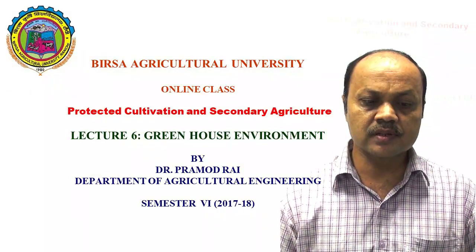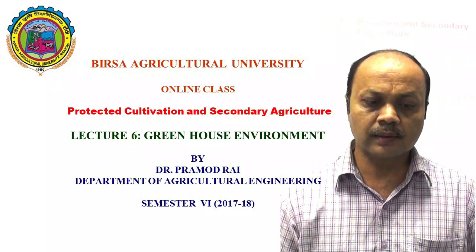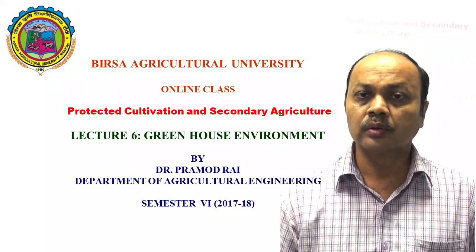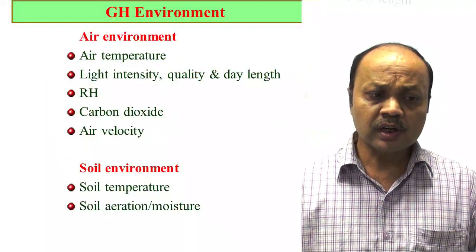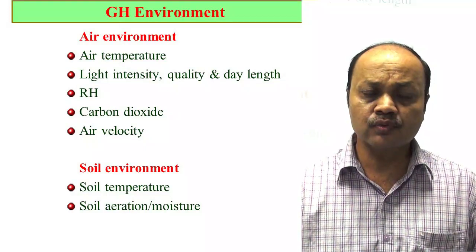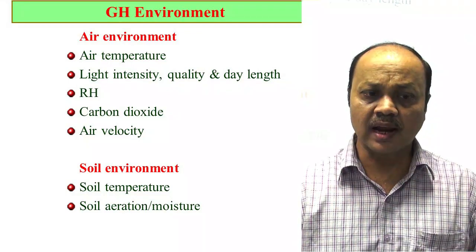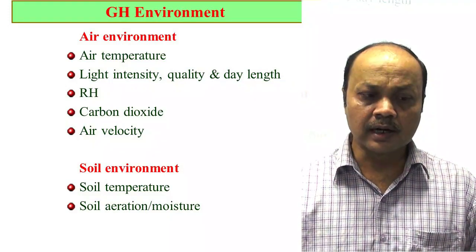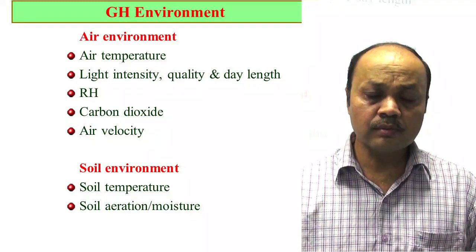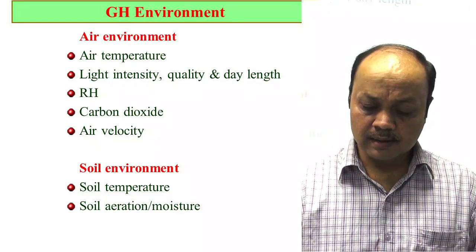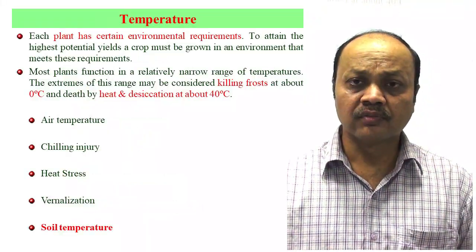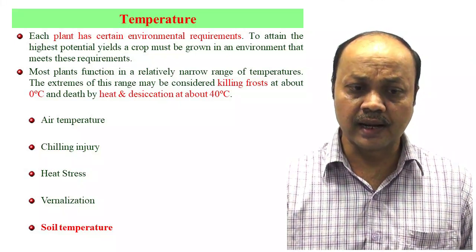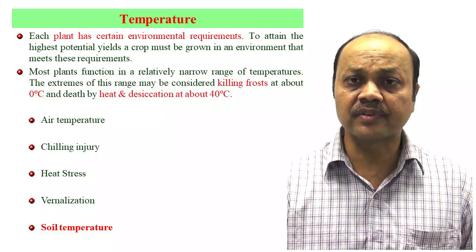Dear students, in lecture 5 we discussed the various types of greenhouses. In greenhouses, the major important factor is how to get the desired environment. By getting the desired environment, we can grow different types of crops around the year. Important environment parameters are classified into air environment and soil environment. In air environment: air temperature, light intensity and quality, day length, relative humidity, carbon dioxide, and air velocity are very important. In soil environment, soil temperature, aeration, and moisture are very important. One by one we will discuss the various environment factors. Here we will briefly discuss the various environmental factors.